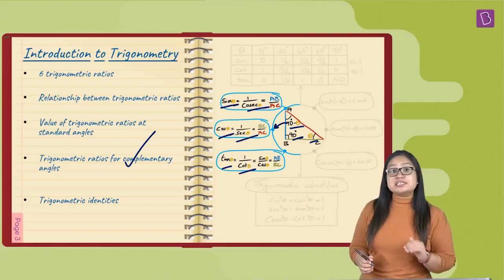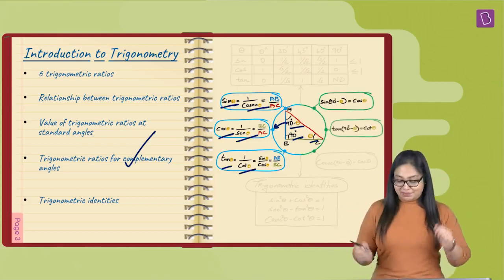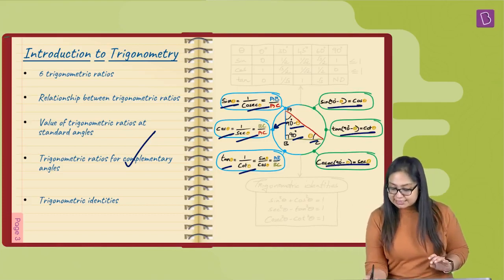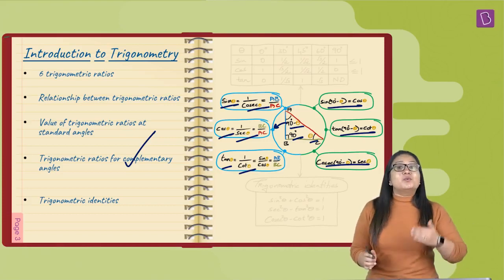The next concept is the trigonometric ratios of complementary angles. There you go. Sin 90 minus theta is cos theta, tan 90 minus theta is cot theta, and cosec 90 minus theta is secant theta.